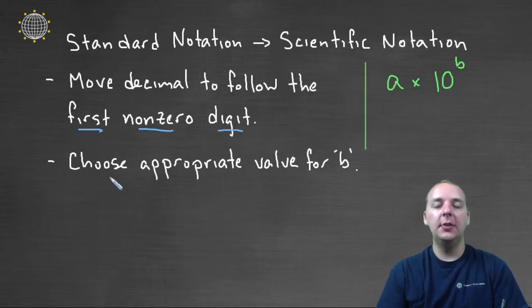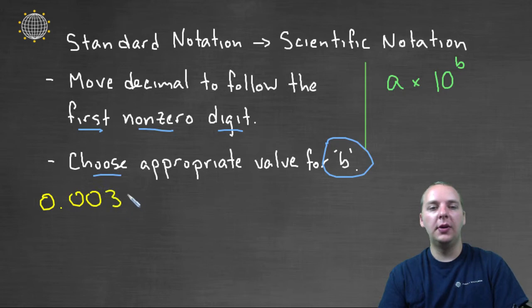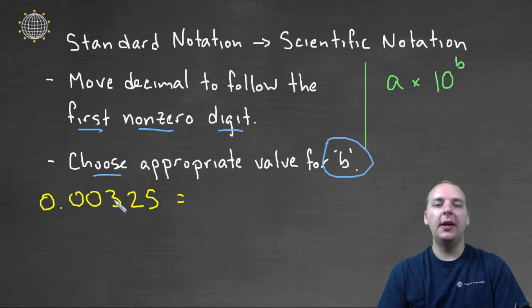And then lastly, depending on how many places you moved your decimal left or right, we need to choose an appropriate value for b, either positive or negative. So let's try an example, let's say we had 0.00325. Well this is in standard notation, let's see if we can write it in scientific notation.